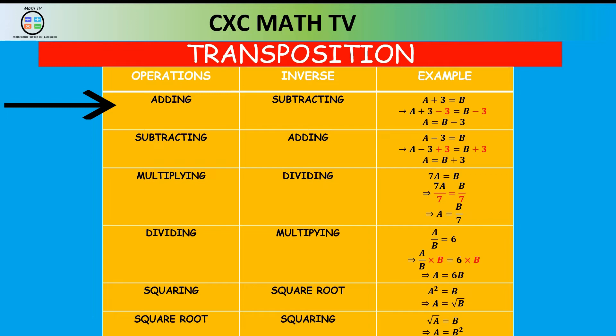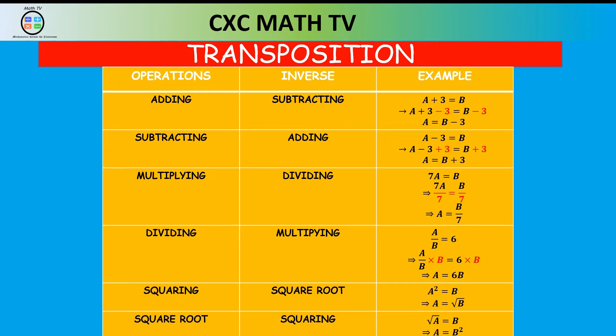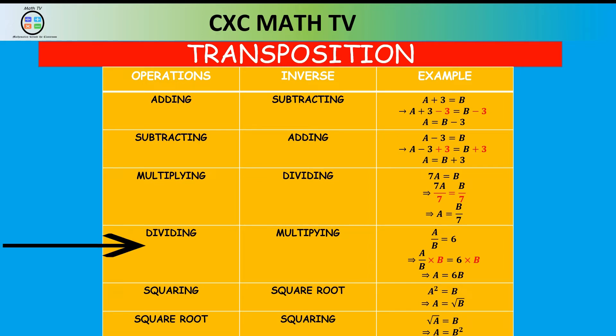When the operation is subtracting, in order to make the variable the subject we have to add. So if A minus 3 equals B, we add to both sides to get A equals B plus 3. When multiplying, we have to divide: 7A equals B means we divide both sides by 7, giving A equals B over 7. When dividing, we multiply: A over B equals 6, multiplying both sides by B gives A equals 6 times B.